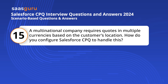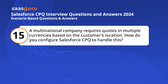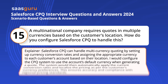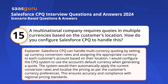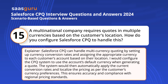Question 15. A multinational company requires quotes in multiple currencies based on the customer's location. How do you configure Salesforce CPQ to handle this? Salesforce CPQ can handle multi-currency quoting by setting up currency conversion rates and assigning the appropriate currency to each customer's account based on their location. I would configure the CPQ system to use the account's default currency when generating a quote, automatically applying current conversion rates and localizing the pricing as per the customer's currency preferences, ensuring accuracy and compliance with regional pricing standards.